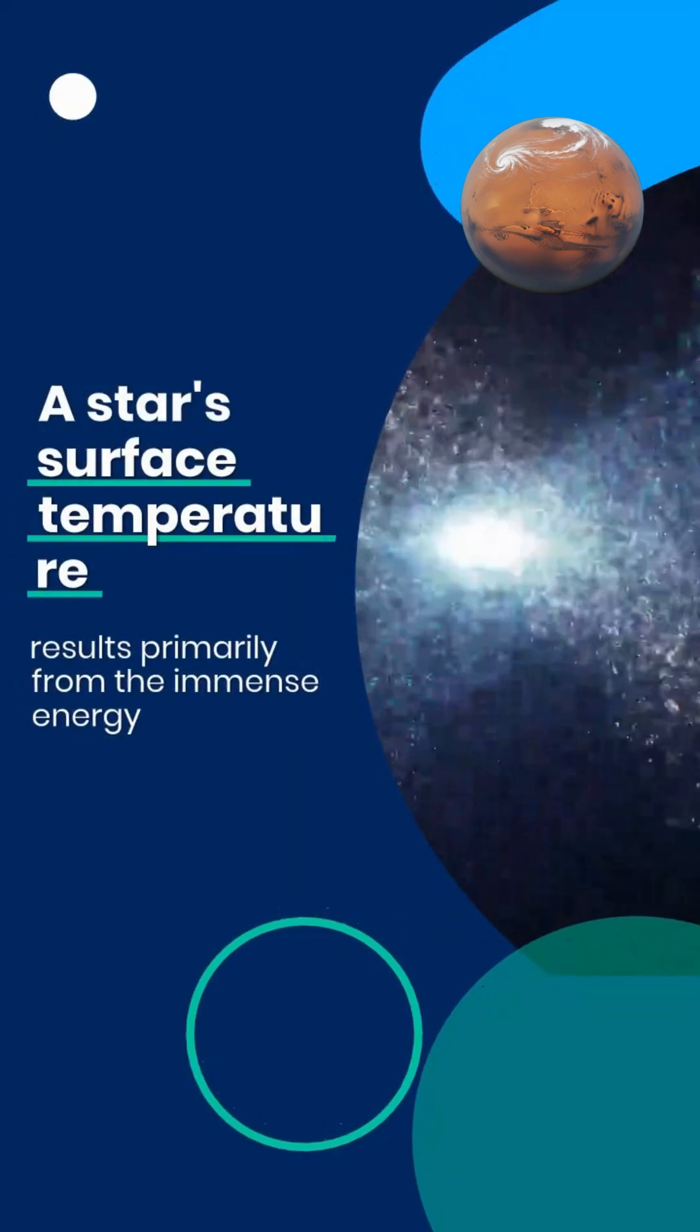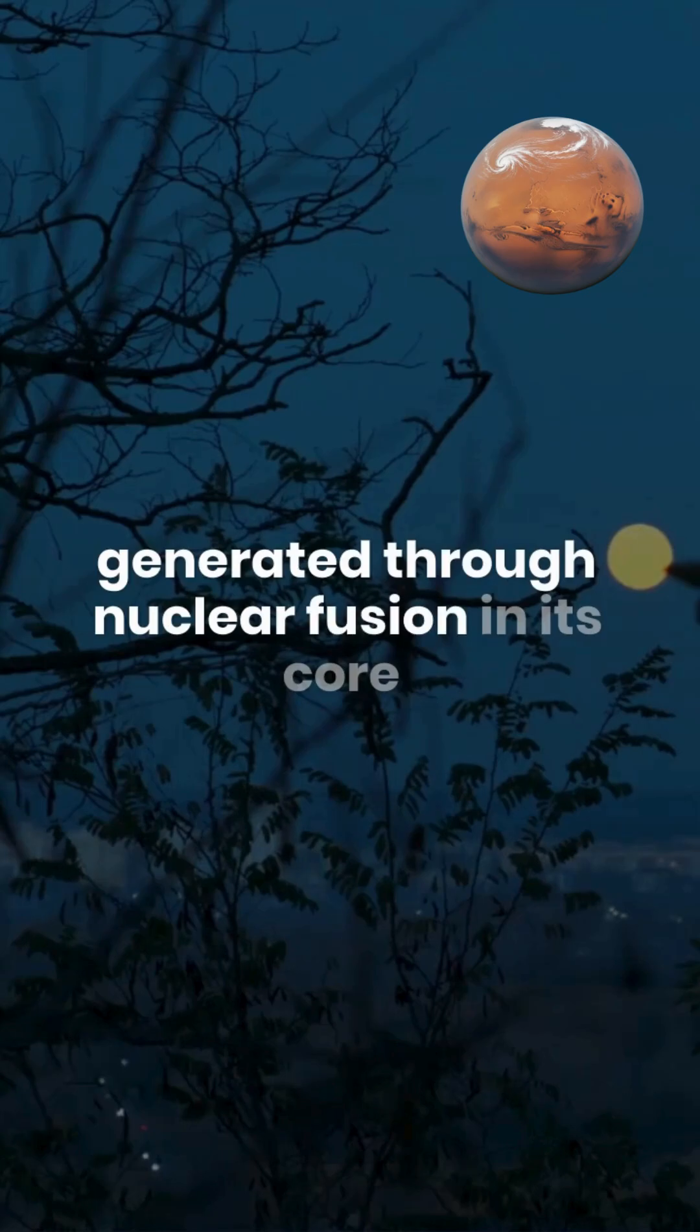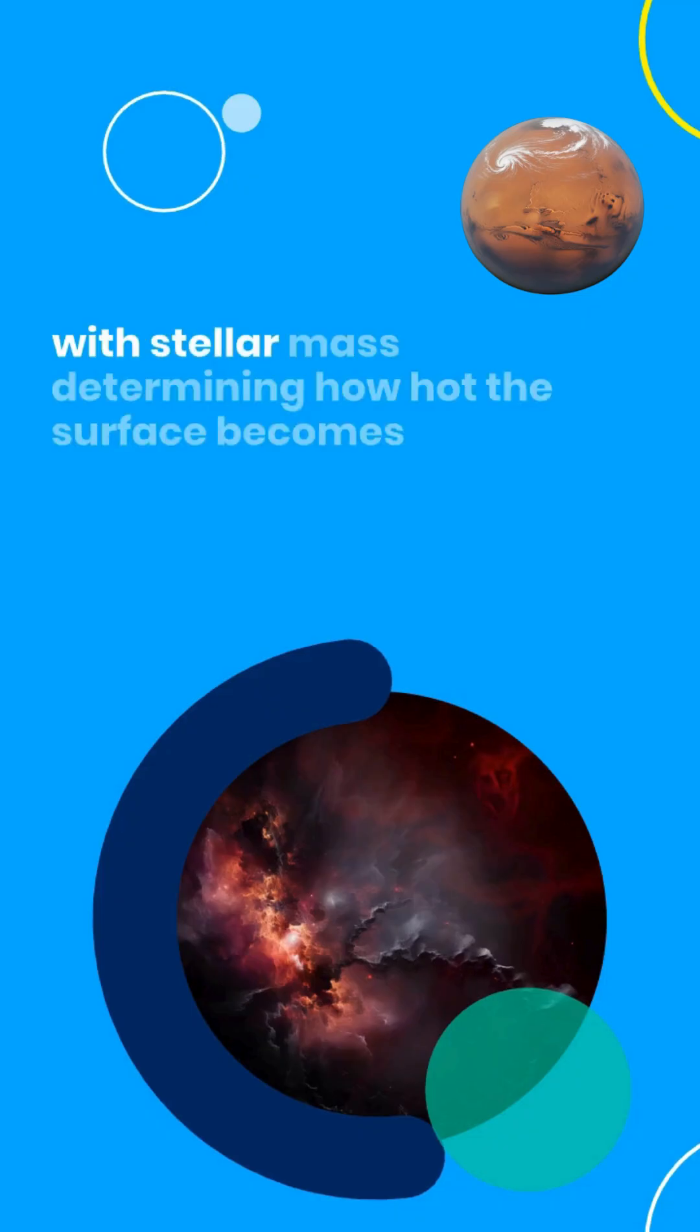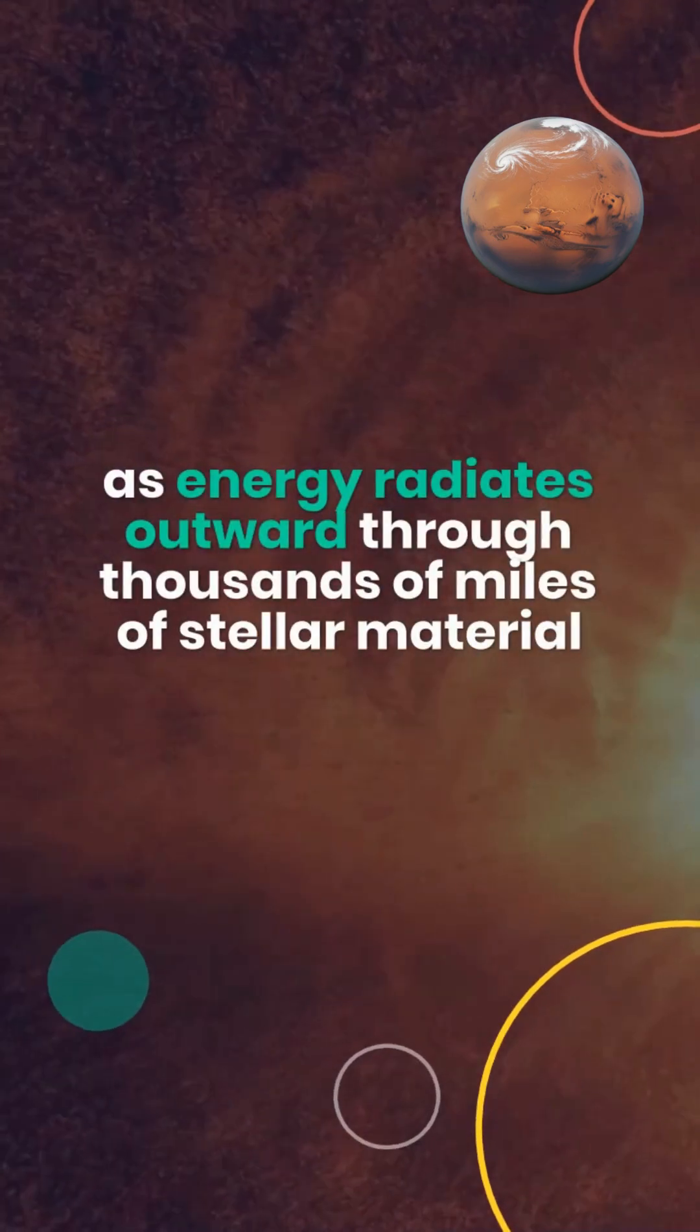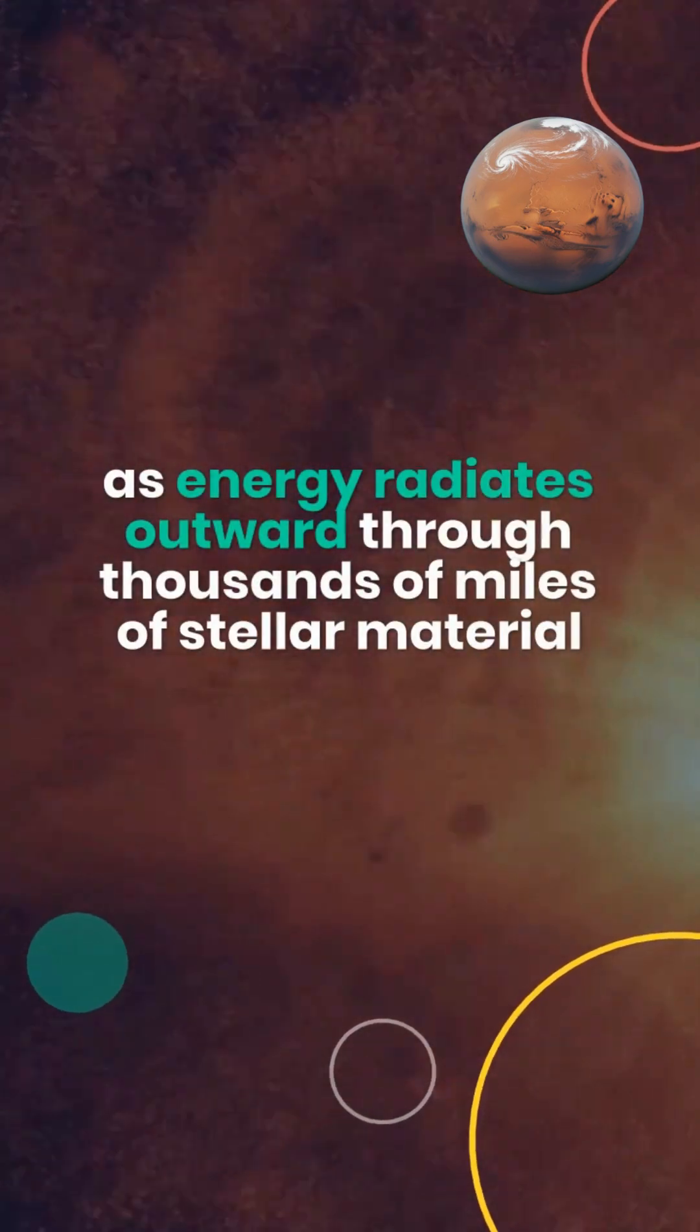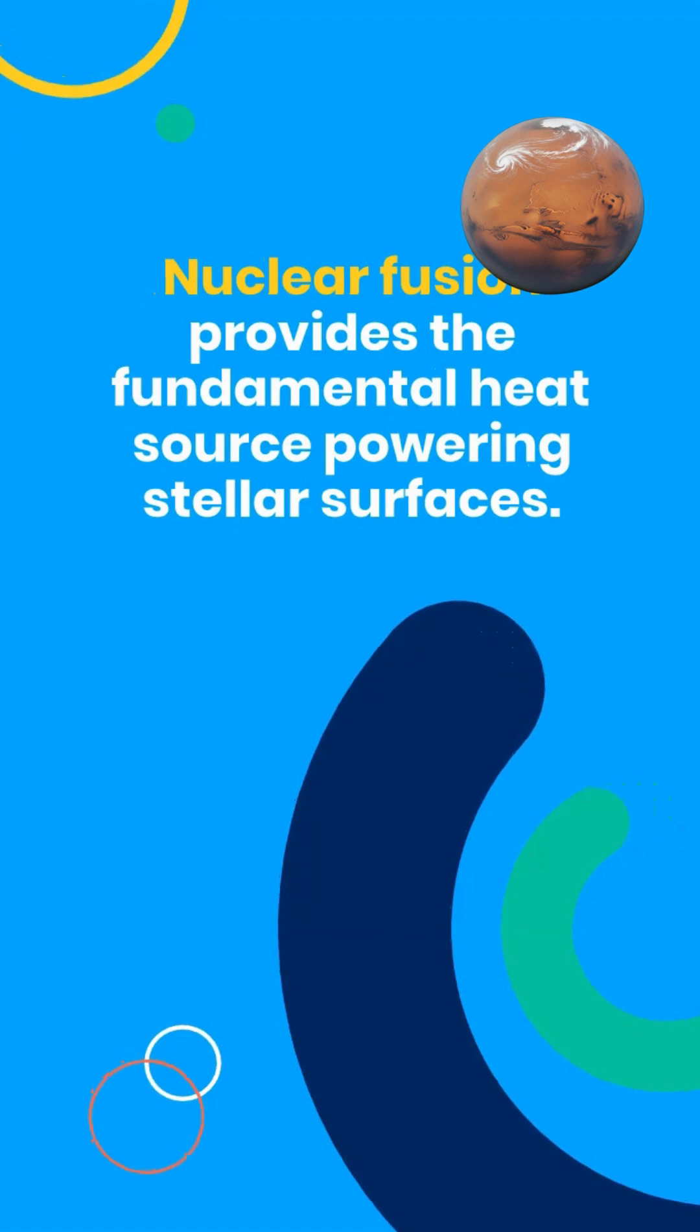A star's surface temperature results primarily from the immense energy generated through nuclear fusion in its core, with stellar mass determining how hot the surface becomes as energy radiates outward through thousands of miles of stellar material. Nuclear fusion provides the fundamental heat source powering stellar surfaces.